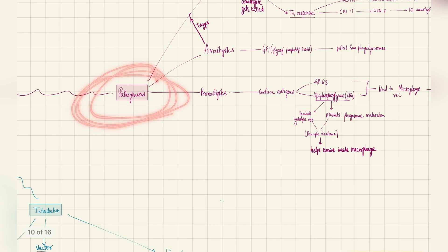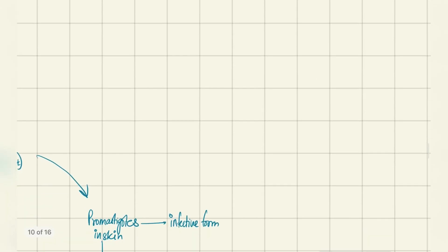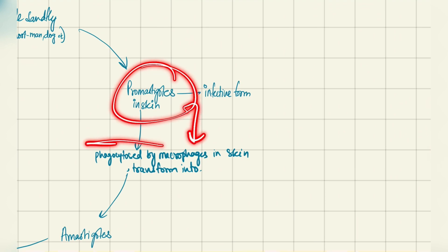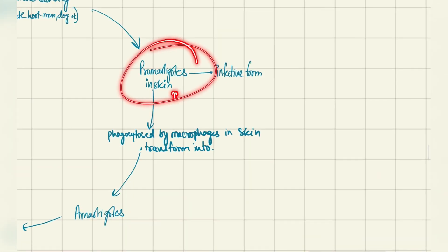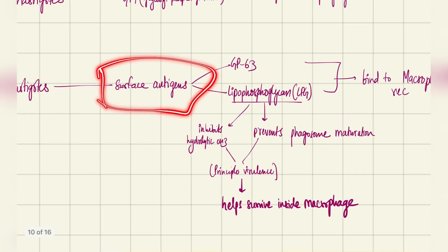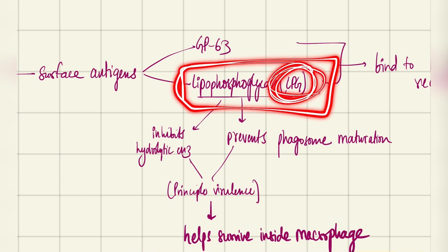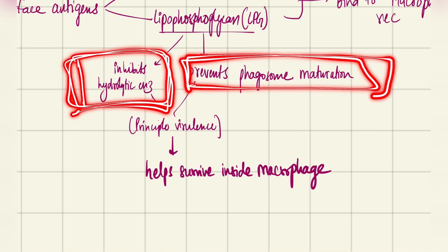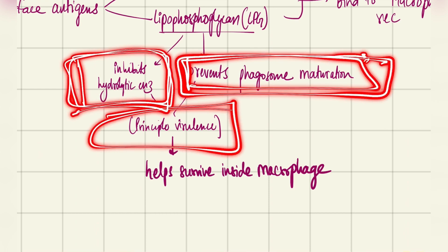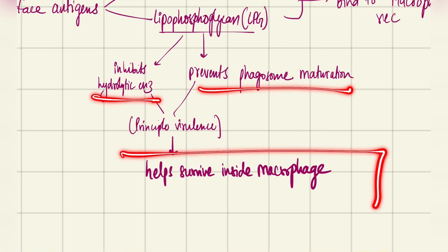Now let's go to pathogenesis. The key question is: why do promastigotes survive after being phagocytosed by macrophages instead of dying? They have surface antigens — GP63 (glycoprotein 63) and LPG (lipophosphoglycan) — which inhibit harmful hydrolytic enzymes and prevent phagosome maturation that would otherwise kill the protozoan. These are the principal virulence factors, allowing the Leishmania to survive inside macrophages.